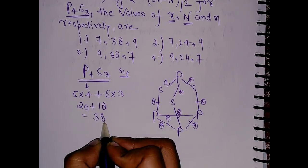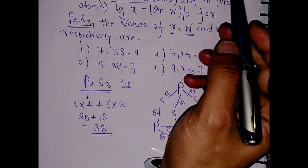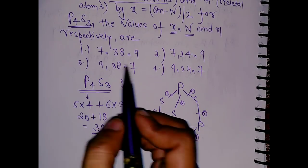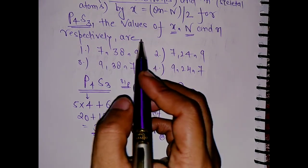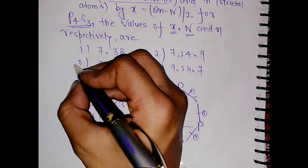Very easy. The two-centered two-electron bonds are nine, which is your option three and four. The total number of valence electrons, which is your n, this is 38, so option three is the correct answer.